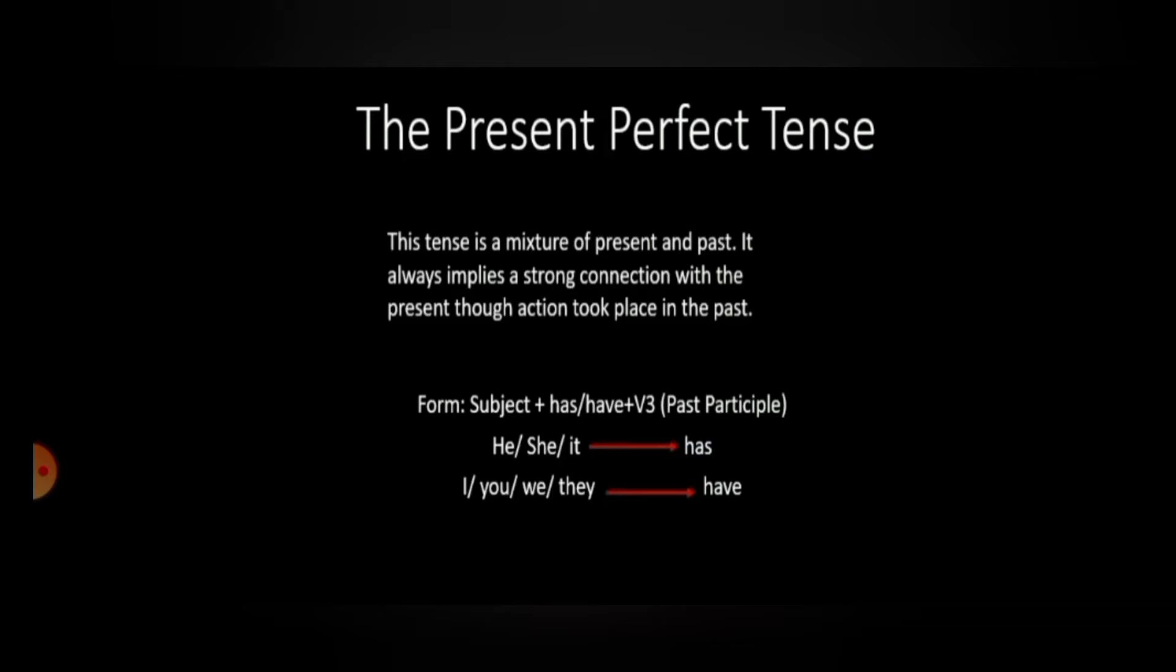for he, she, it, we will use has, and if the subject is I, you, we or they, then have should be used. Let's look at some of the sentences.